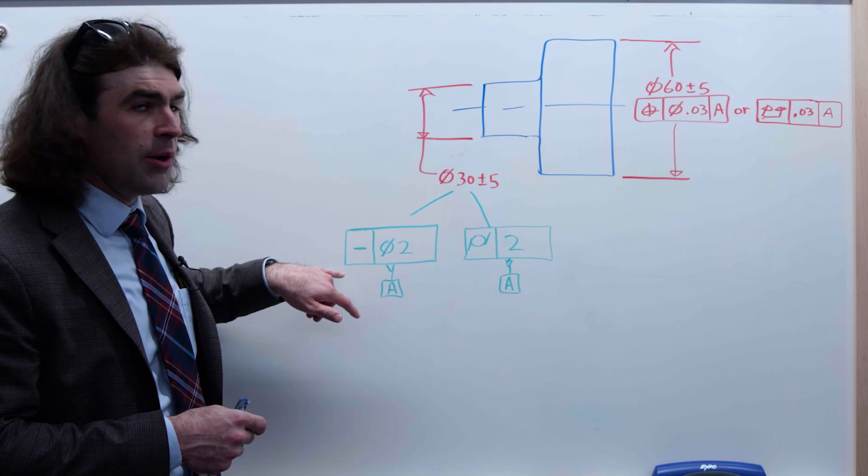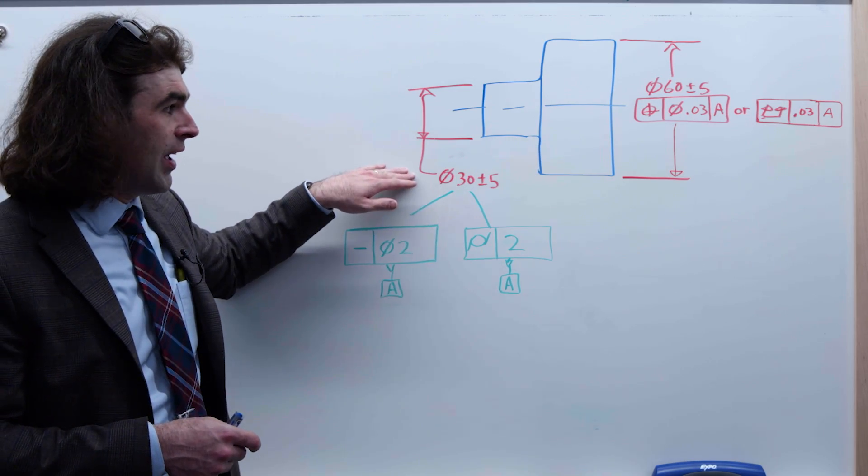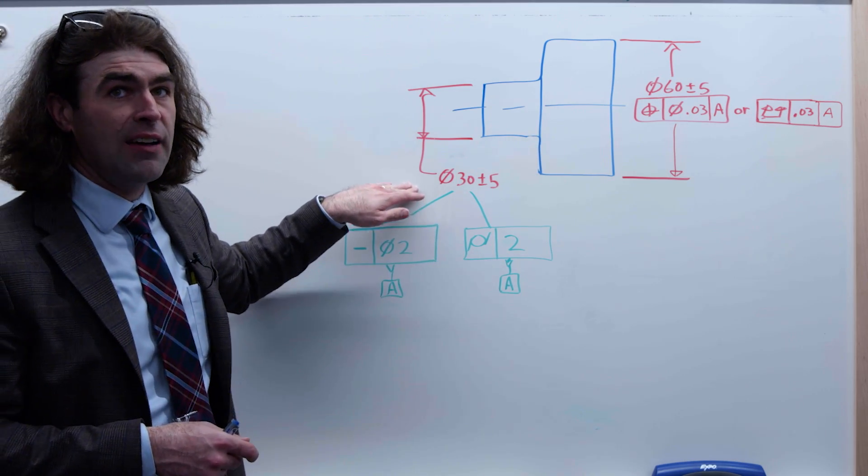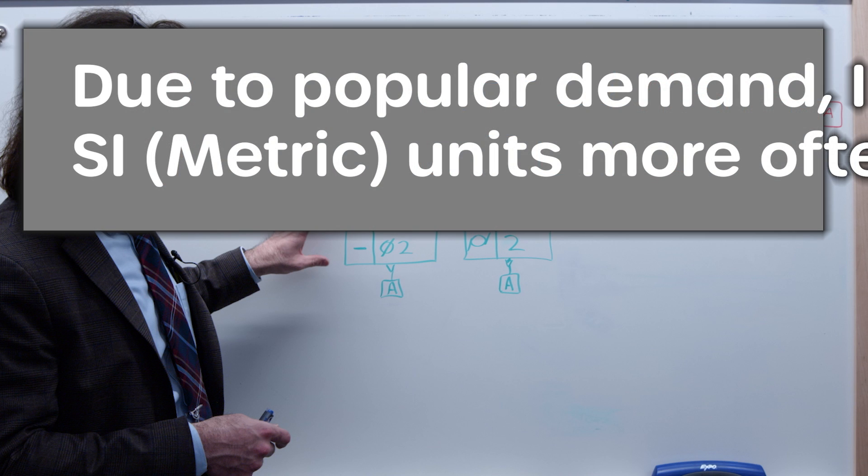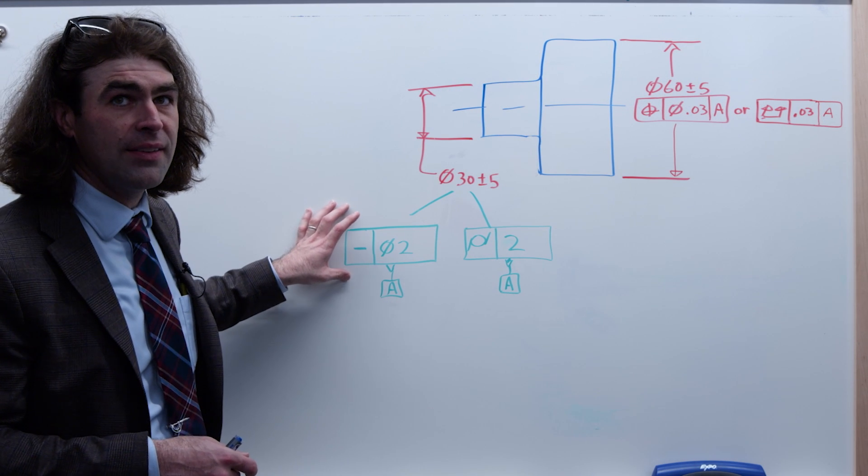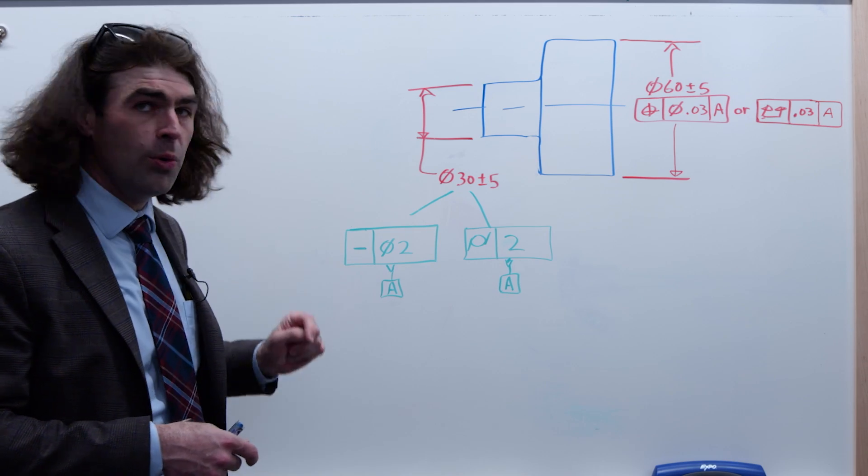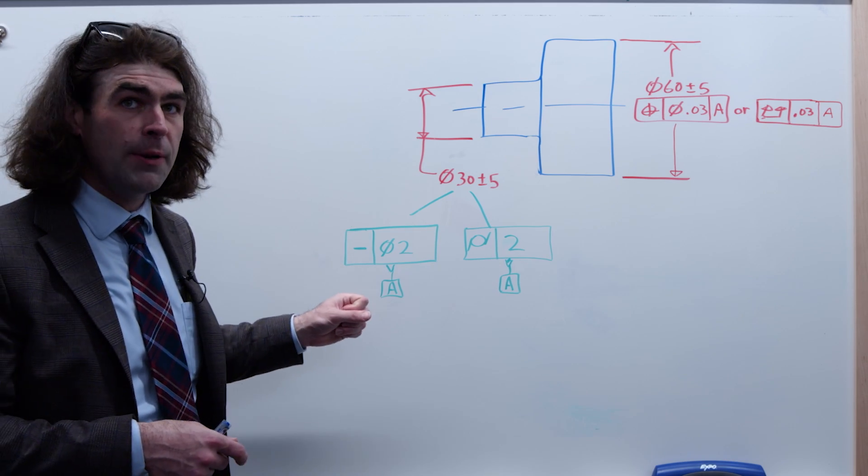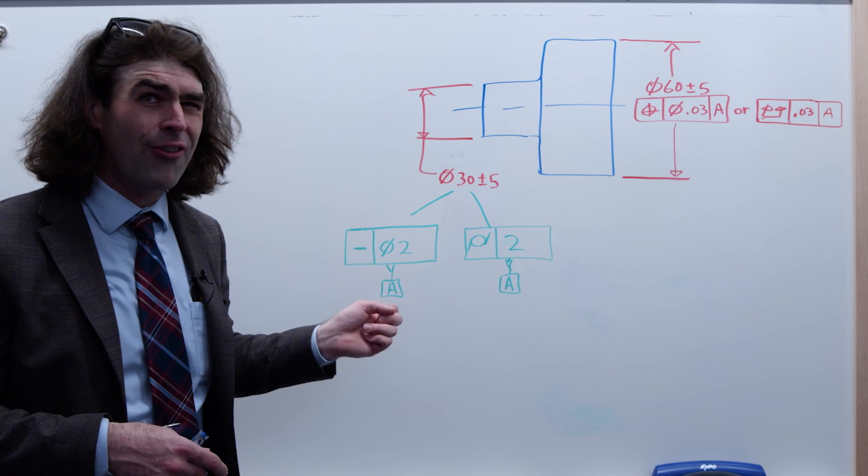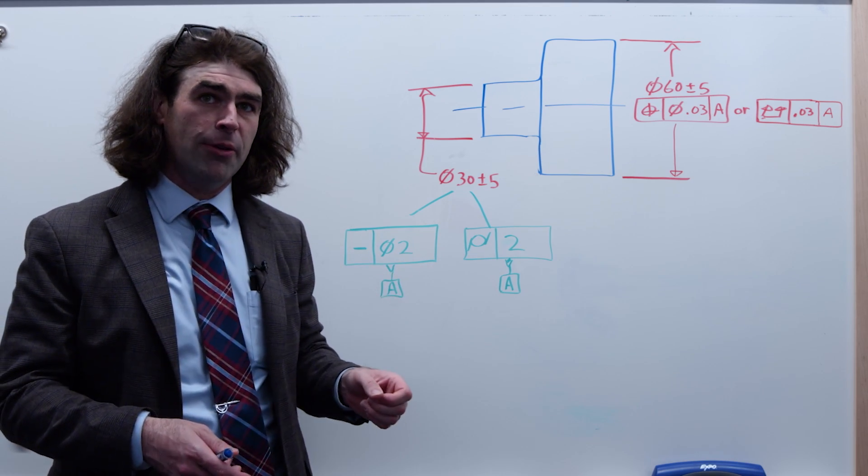Now say we're going to have our size 30 plus or minus 5 millimeters and we're going to have a straightness of 2 millimeters. So we can put our datum feature symbol on that feature control frame. I think this is where it causes problems.